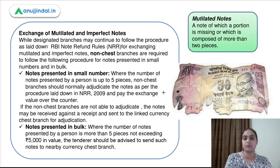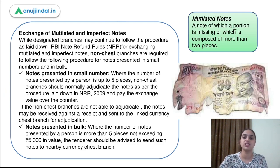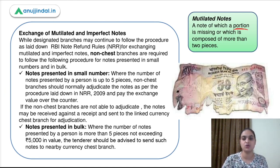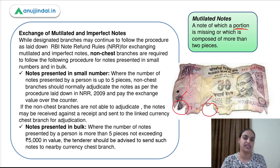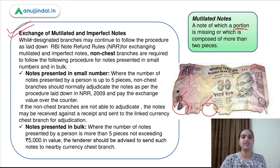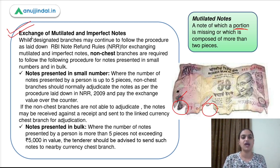A mutilated note is one where some portion is missing — for example, if the serial number or another important part of the note is absent. Such a note is called a mutilated note. To get a mutilated note exchanged, specific RBI Note Refund Rules 2009 have to be followed. The procedure also depends on whether the exchange is happening at a chest branch or a non-chest branch — a branch where RBI doesn't keep currency stock.